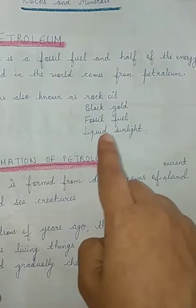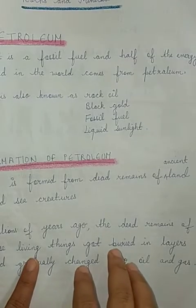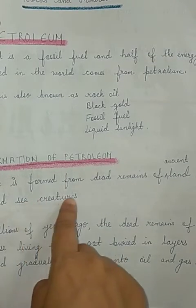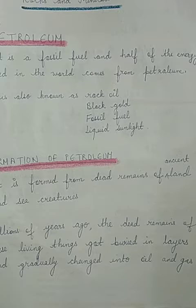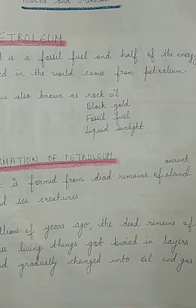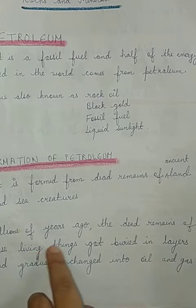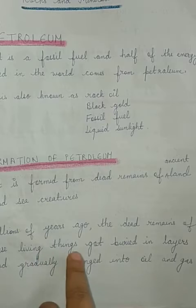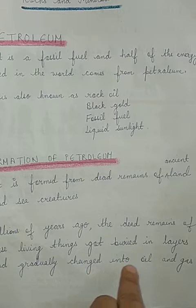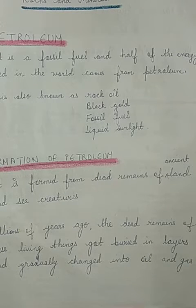Petroleum is formed from the dead remains of ancient land and sea creatures — meaning ancient dead land and sea animals. What happens is that, over millions of years, the dead remains of these living things get buried in layers and gradually change into oil and gas. These dead sea creatures and land creatures are buried in layers and gradually changed into oil and gas.